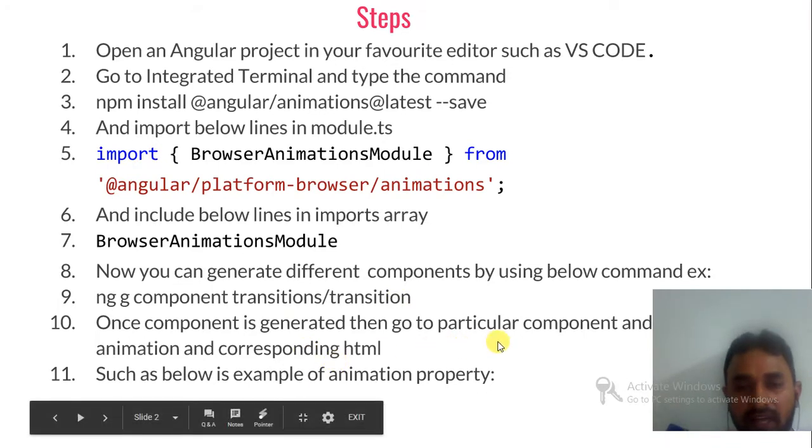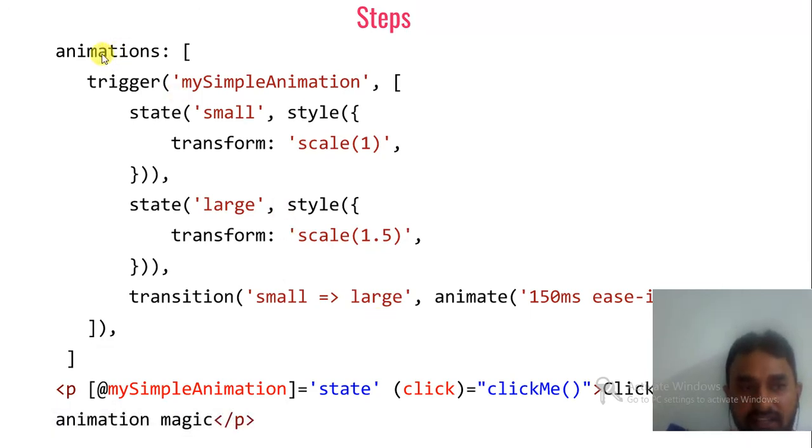Once component is generated then go to particular component and write the animation code and respective html. So what is the animation code we are going to write? Let's look into the next slide. So animation, whenever you start the component then you write the code like template, templateUrl, styleUrls, these things, then there itself you declare animations. Then start the bracket, then triggers. So trigger is nothing but which will be used in my html. This is the one unique ID name which is going to get used in my html.